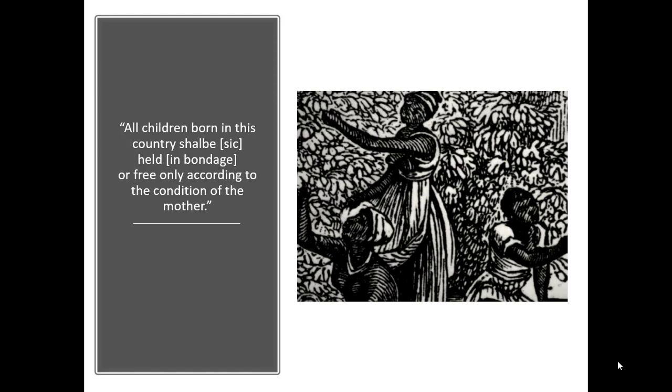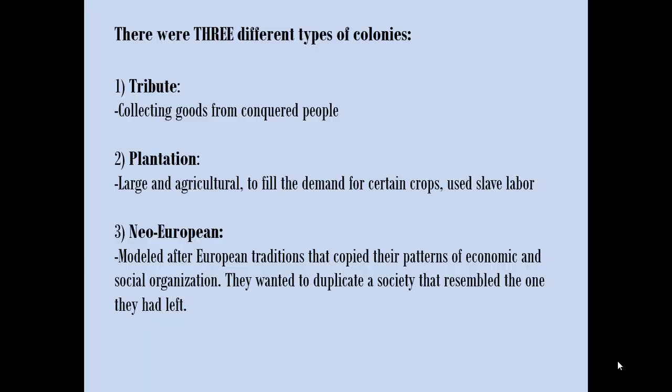So we talked about colonies and colonization. There are three types of colonies found in the New World. The first is tribute, found in Mexico and South America — not in the lands that became the United States. Plantation: large and agricultural, filling the demand for certain crops, using slave labor. Neo-European: modeled after European traditions, copying their patterns of economic and social organization. Typically, plantation colonies were in the South and Neo-European in the North, because of different geography and different needs.